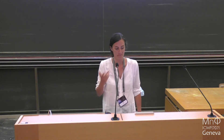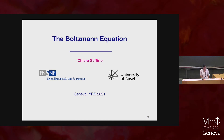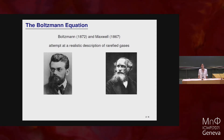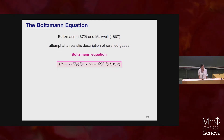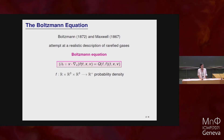The basic notion I want to speak about is the Boltzmann equation. The Boltzmann equation was introduced at the end of the 19th century by Boltzmann and Maxwell, who were attempting to describe the behavior of a rarified gas. The unknown of the Boltzmann equation is a probability density on phase space — a function of time, space, and velocity. The left-hand side is just the action of the free transport operator on f, modeling the fact that particles in the gas move freely.